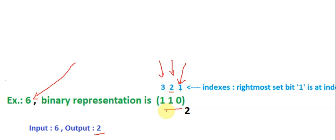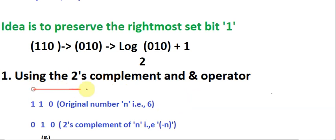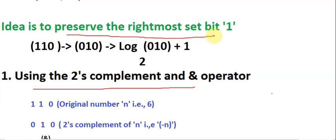The first method uses the two's complement and the AND operator. Methods one and two share the same idea: to preserve the rightmost set bit. We take number six, apply some binary operations, and get a result where all bits are set to zero except the rightmost set bit. Then we take log base two of that number and add one.